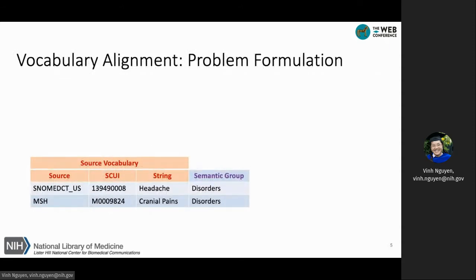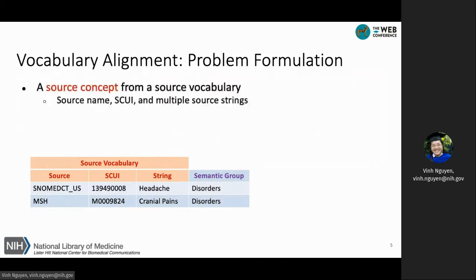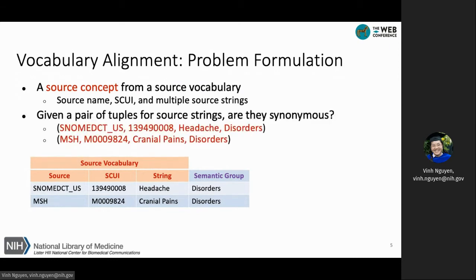Before describing the two rule-based and learning-based approaches, we briefly define the alignment problem. The input of the alignment process is a set of source vocabularies or terminologies. The task is to predict if two source strings are synonymous or not. For example, is the headache concept from SNOMED-CT and cranial pains from MeSH synonymous or not?